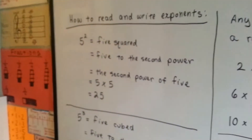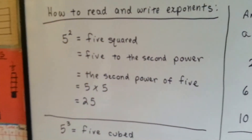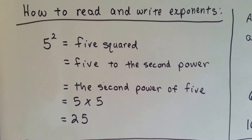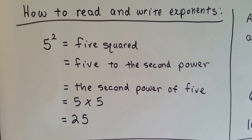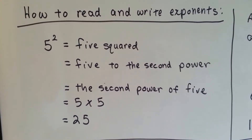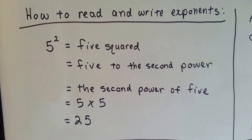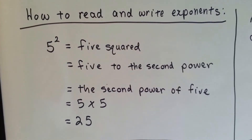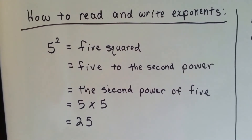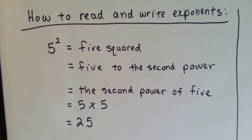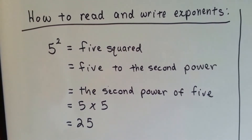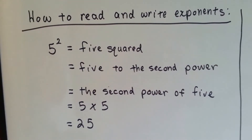How to read and write exponents. If you see a 5 with a little 2 as an exponent, we say '5 squared,' or '5 to the second power,' or even 'the second power of 5.' It means 5 times 5, and it equals 25.